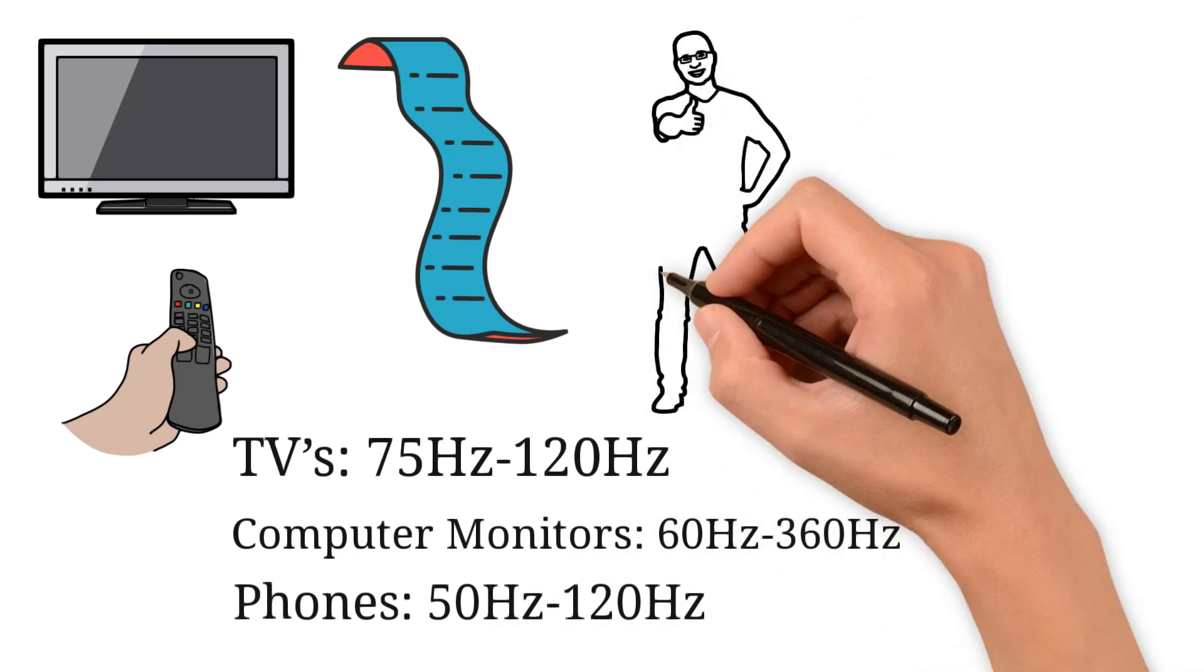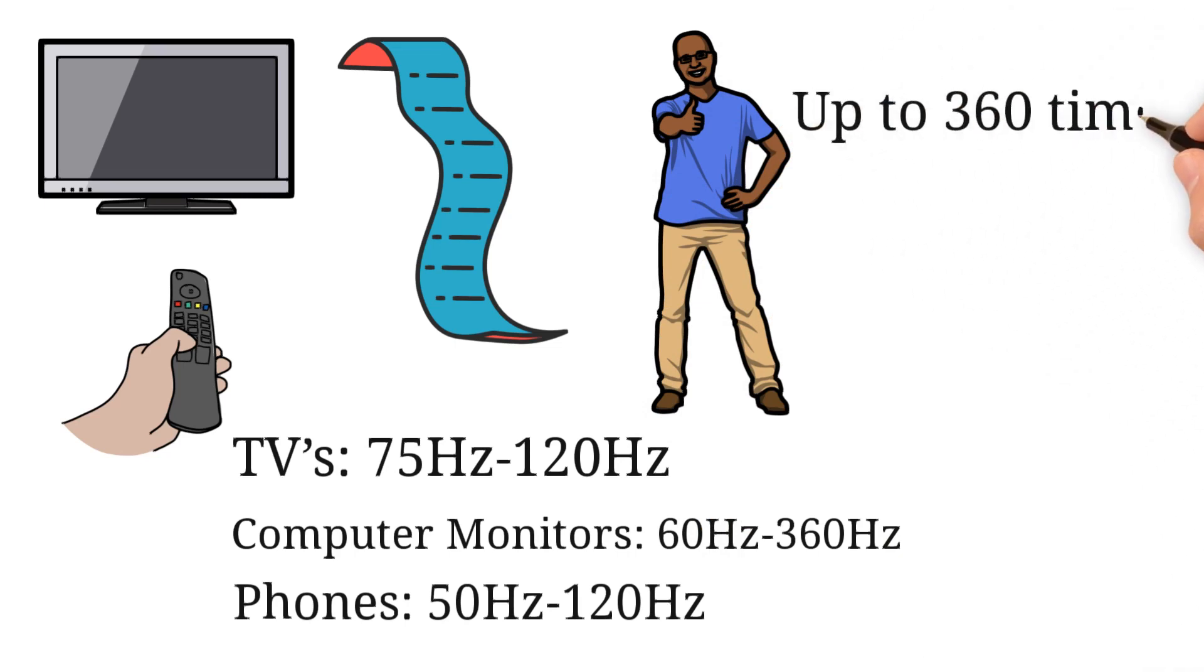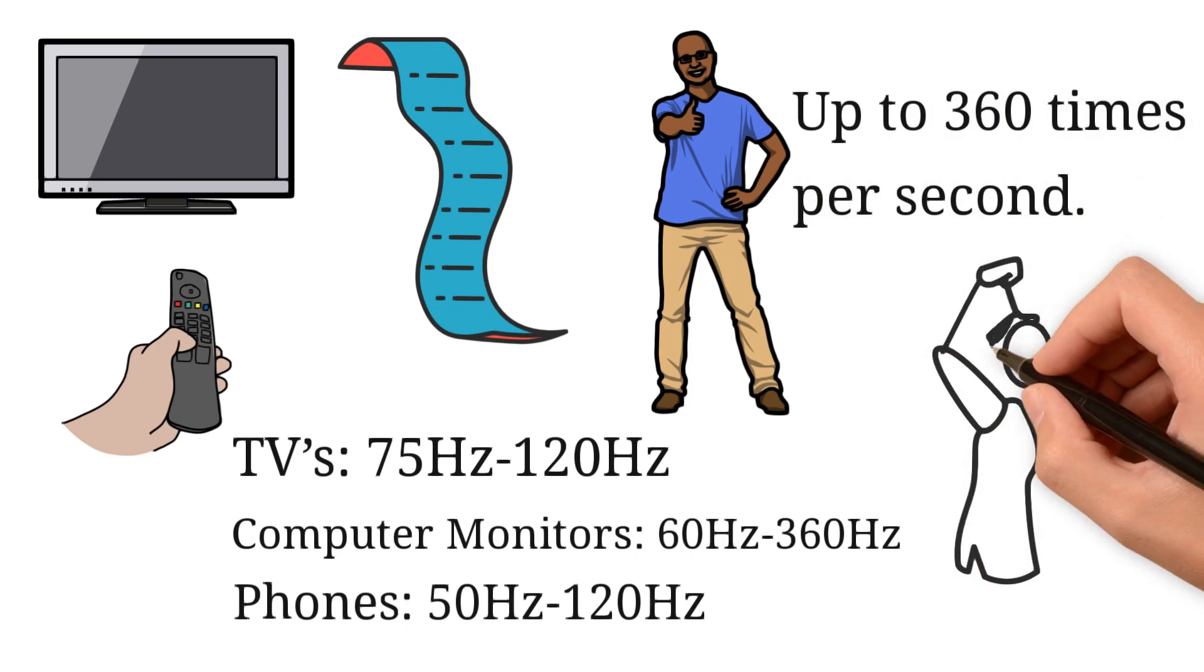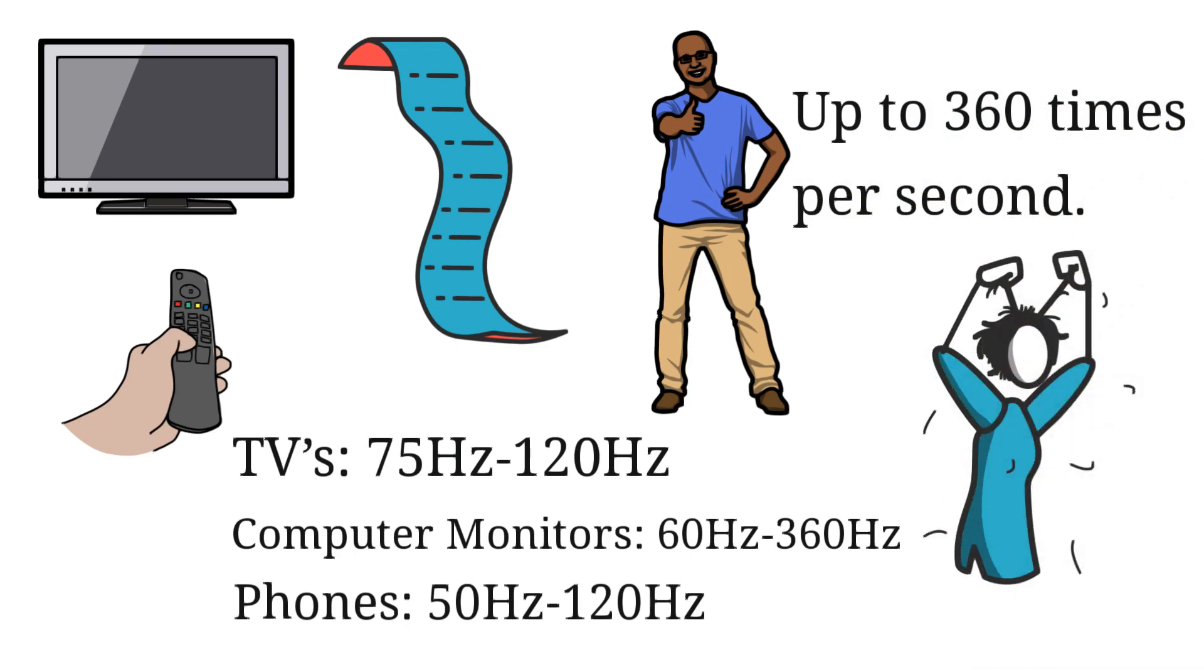Even though this process looks smooth to a human eye, behind the scenes it changes up to 360 times per second. This means that even if you try your hardest, you won't be able to notice it.